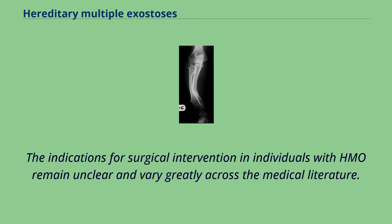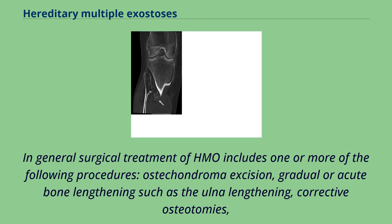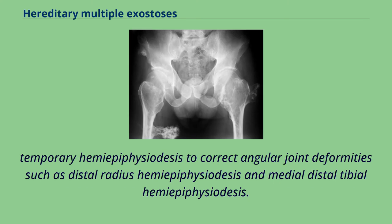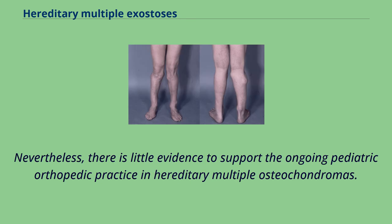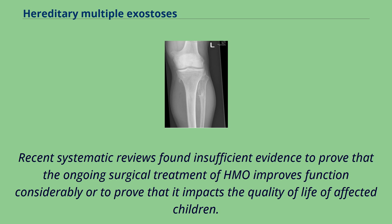The indications for surgical intervention in individuals with HMO remain unclear and vary greatly across the medical literature. In general, surgical treatment includes osteochondroma excision, gradual or acute bone lengthening such as ulna lengthening, corrective osteotomies, and temporary hemiepiphysiodesis to correct angular joint deformities such as distal radius hemiepiphysiodesis and medial distal tibial hemiepiphysiodesis. Nevertheless, there is little evidence to support ongoing pediatric orthopedic practice. Recent systematic reviews found insufficient evidence to prove that surgical treatment of HMO improves function considerably or impacts the quality of life of affected children.